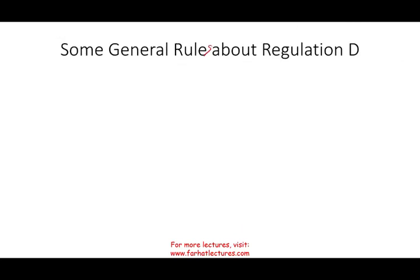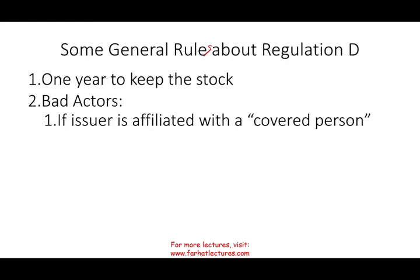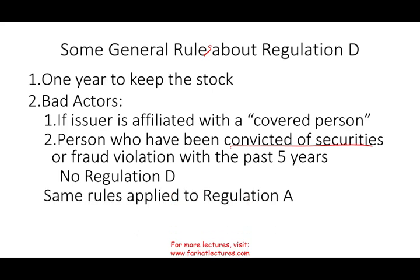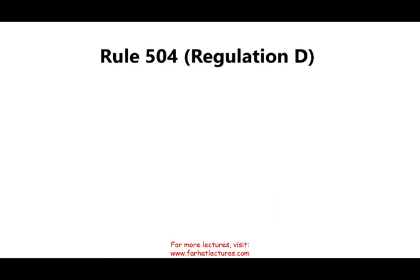Some general rules about Regulation D: if you buy the stock, you have to keep it for one year. There's something called the bad actor's rule or bad actor's disqualification. If someone affiliated with the issuer — a covered person — has tried to defraud the SEC or other investors in the past, or has been convicted of securities fraud within the past five years, then the issuer cannot use Regulation D. You cannot use this exemption from filing, and therefore you have to go through the whole process, which is costly and time-consuming. This bad actor rule also applies to Regulation A. You must also inform the SEC within 15 days of the first offering if you're going through a Regulation D.